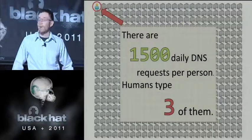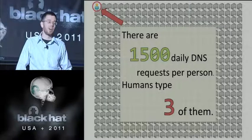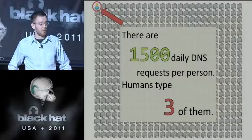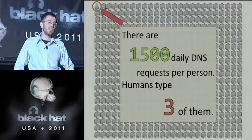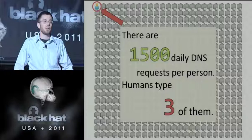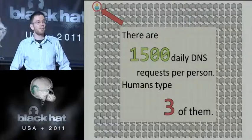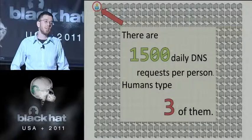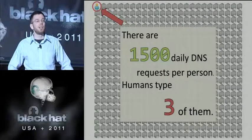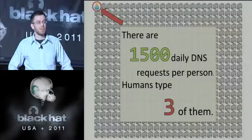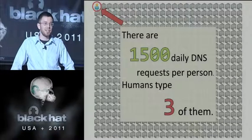The graph here is actually to scale. Typo squatters are going after the little man in the top right, whereas bit squatting affects all of those server icons. I get the 1,500 number from the OpenDNS blog — in March 2011, they received 30 billion requests in one day with 20 million users, giving 1,500 daily DNS requests per user. Humans visit approximately 89 different domains per month, or about 3 per day. So while typo squatters go after 3 domains people type in, bit squatting goes after the 1,497 they don't.